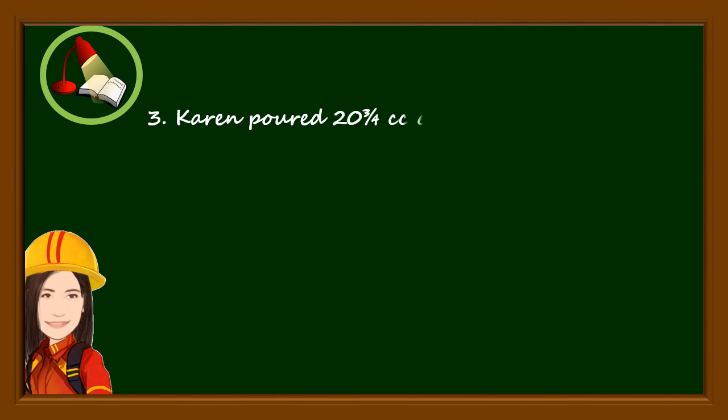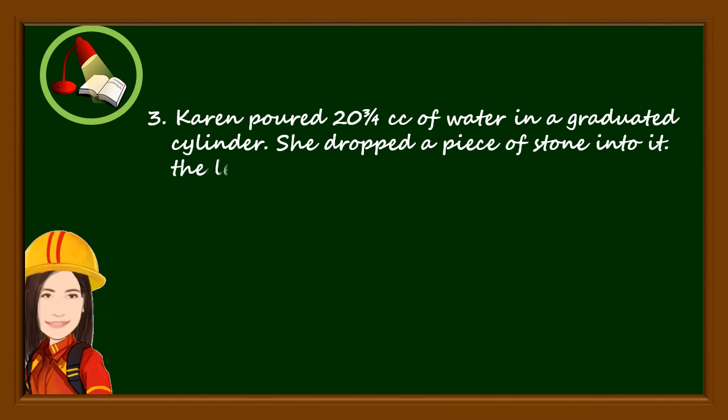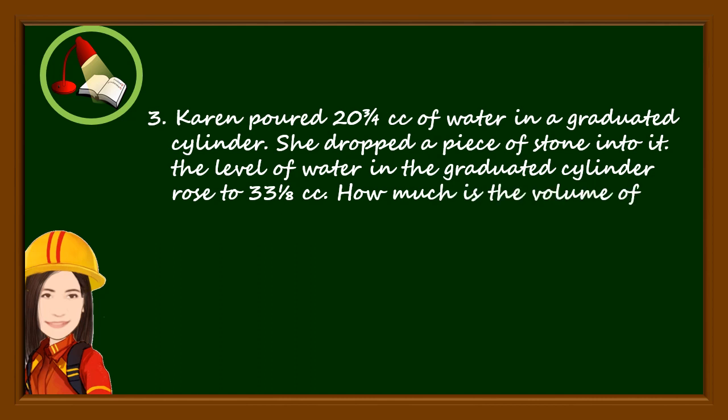Karen poured 20 3/4 cubic centimeters of water in a graduated cylinder. She dropped a piece of stone into it. The level of water in the graduated cylinder rose to 33 1/8 cc. How much is the volume of the stone in cubic meter?